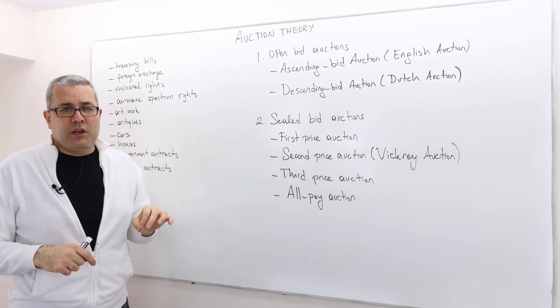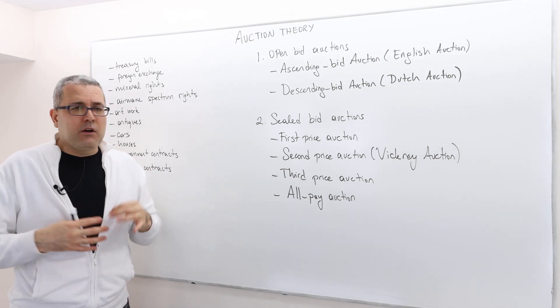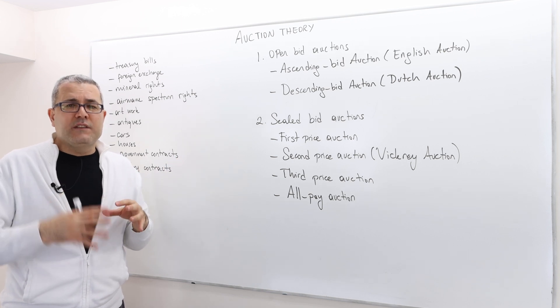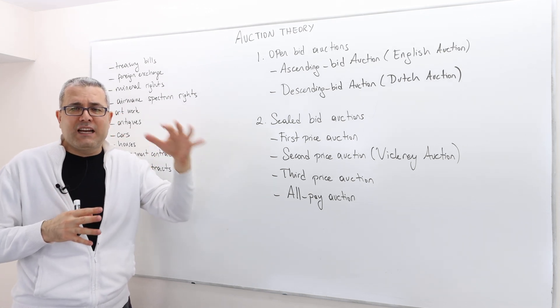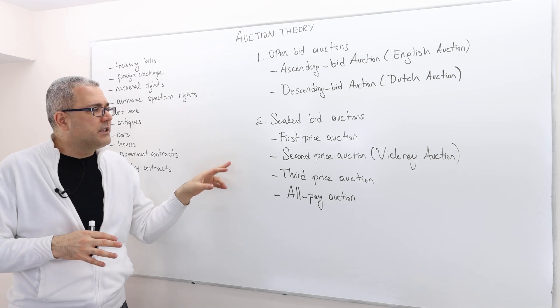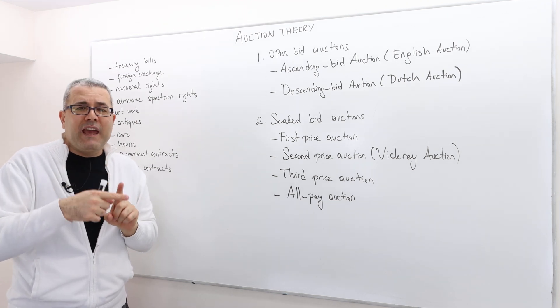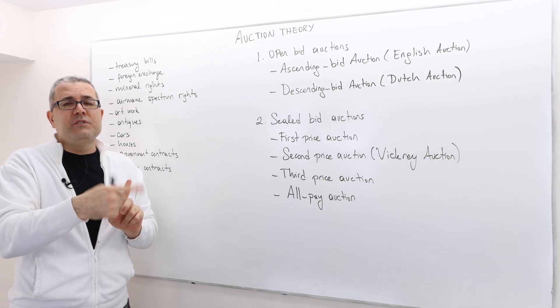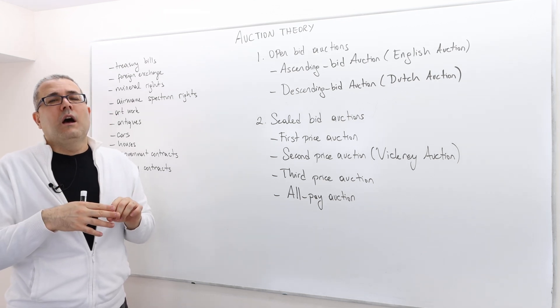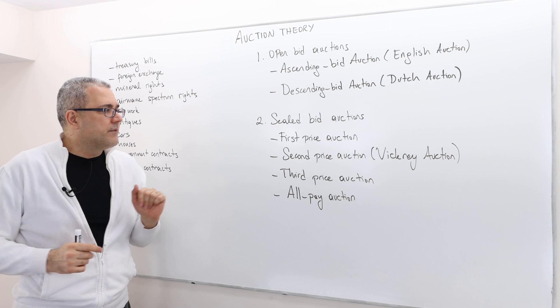And the second price auction, also known as Vickrey auction. Again, the winner is the highest bidder. The person who makes the highest bid wins the auction. However, he doesn't pay his bid. He pays the highest losing bid or the second highest bid.